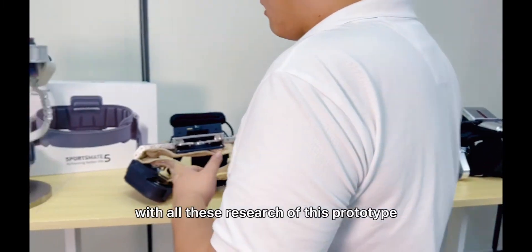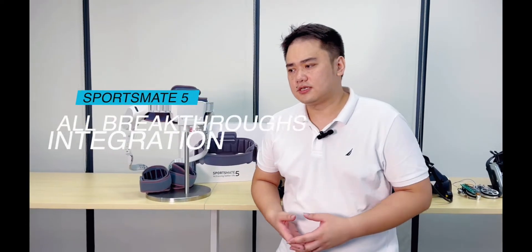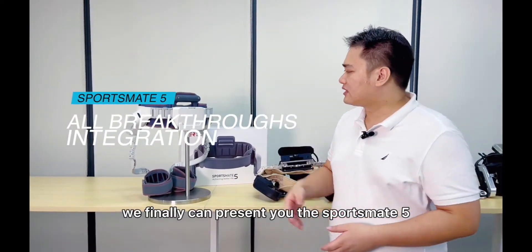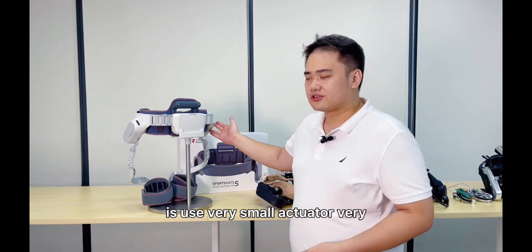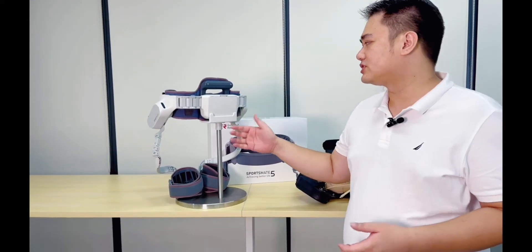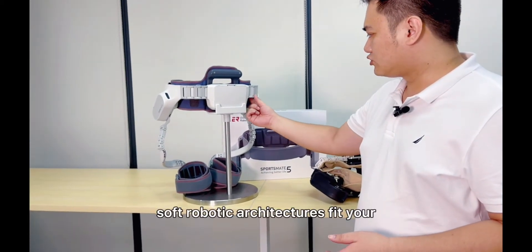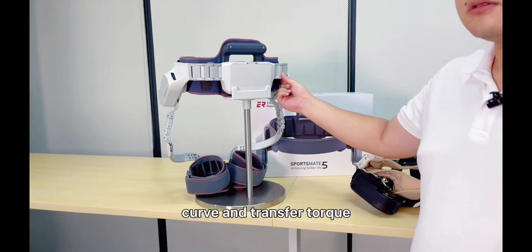And then finally, with all this research, all these prototypes, all these technological breakthroughs, we finally can present you the SpotMate 5. We use very small actuators, very small battery package. You can change your batteries. And the soft robotic architecture fits your curve and transfers torque.